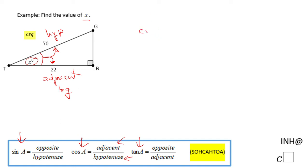So I'm going to write here: cosine of x, the measure of angle t, equals 22 over 70. At this moment, for finding the angle we need a calculator that has the inverse function of cosine.